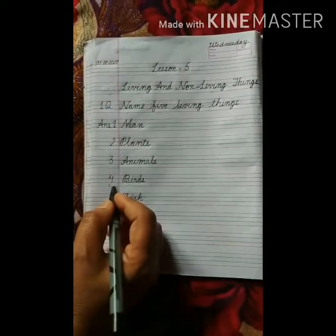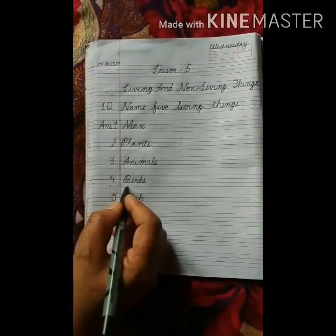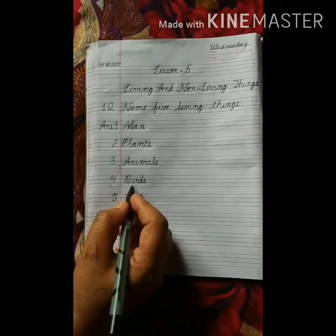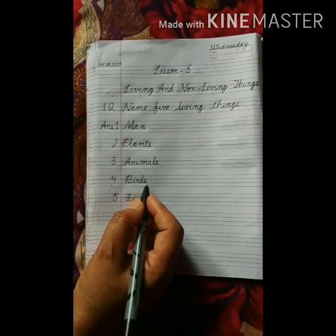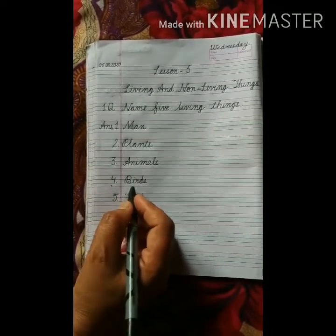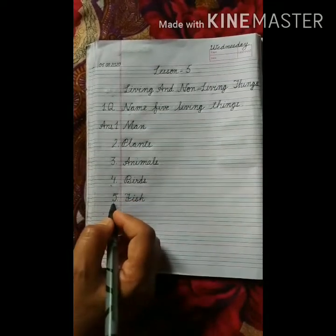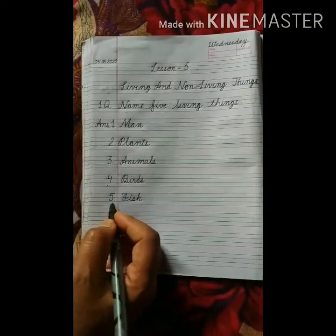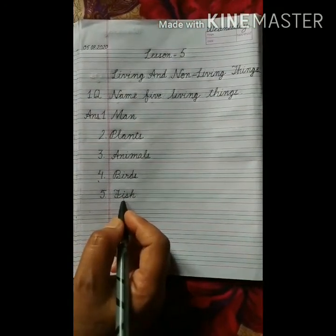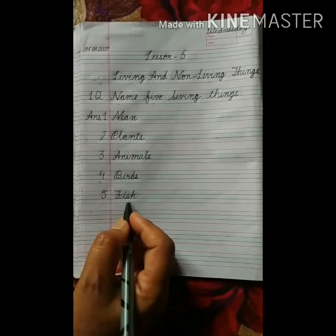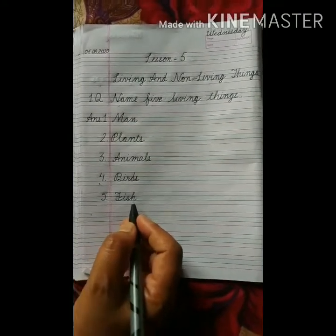Number 4: Birds. B-I-R-D-S. Birds. Number 5: Fish. F-I-S-H. Fish.